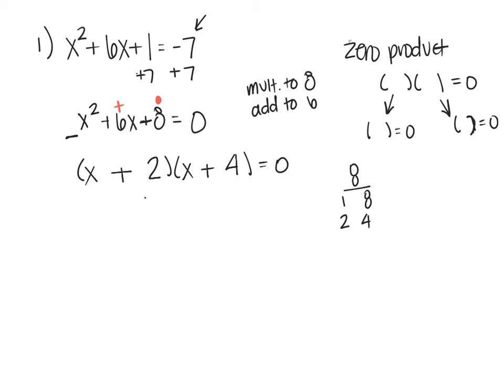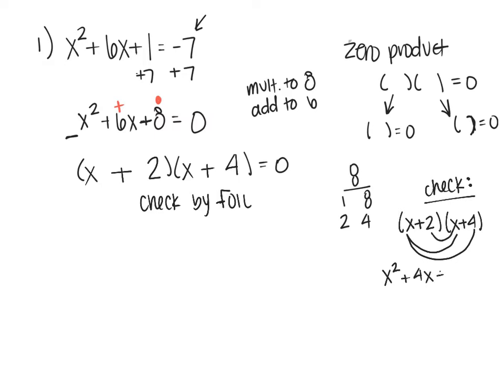Check these by FOIL. So let's work over here: x plus 2, x plus 4, this is my check. FOIL says first x times x gives me x squared, outer 4 times x which is 4x, inner 2 times x, and last 2 times 4 gives me 8. Combine up my like terms, get x squared plus 6x plus 8, which if you notice is the same thing as my question. So I know my factors are correct.